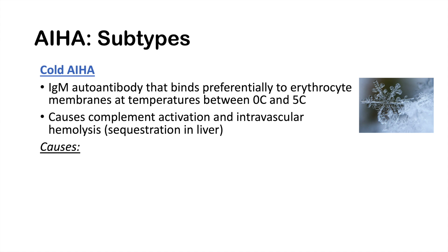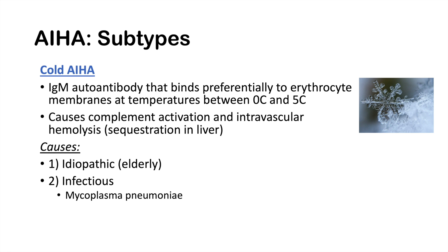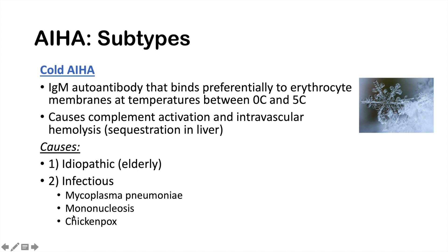Cold autoimmune hemolytic anemia has several causes. The first is idiopathic, more typical in elderly patients. Infectious causes include mycoplasma pneumonia and mononucleosis — easy to remember because IgM matches the M in mycoplasma and mononucleosis — and chickenpox. The key points are: IgM autoantibody binding preferentially at 0–5 degrees Celsius, causing complement activation and intravascular hemolysis.